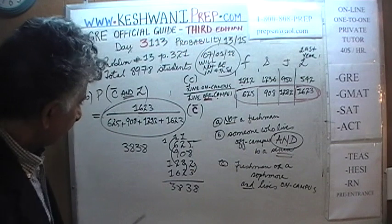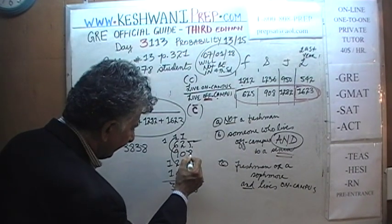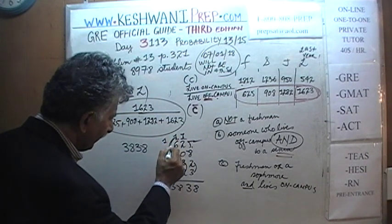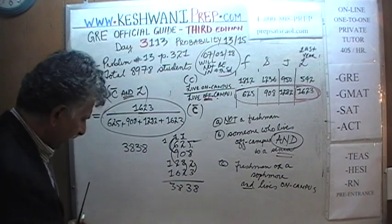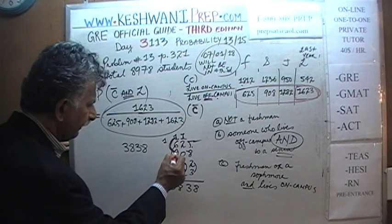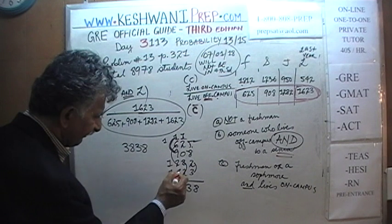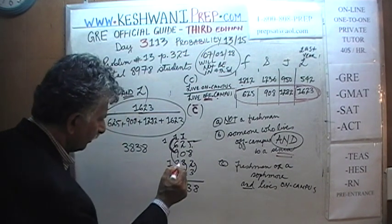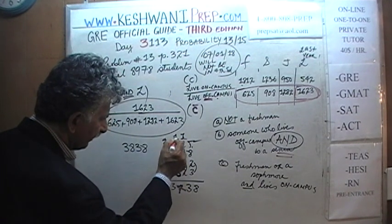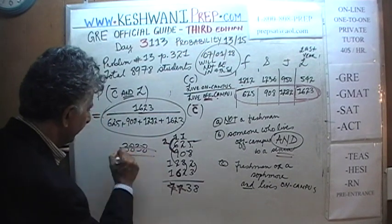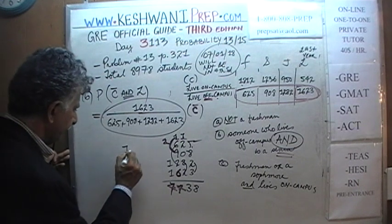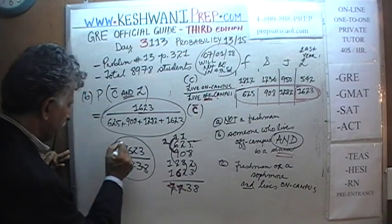Wait, that's not right either — let me correct that. 6 plus 6 is 12, plus 2 is 14, so carry 1 and write 4. Working through carefully: the correct total for off-campus students is 4,438. So the answer to part B is 1,623 out of 4,438. Voila — that's the answer to part B.